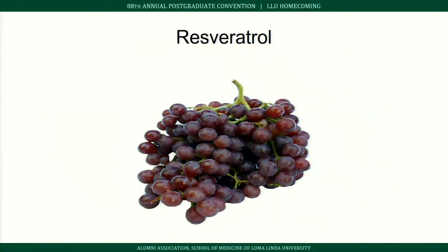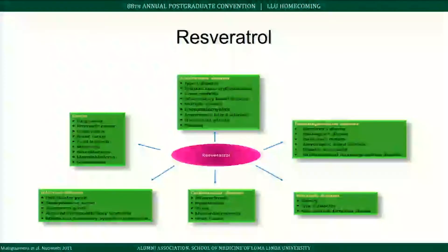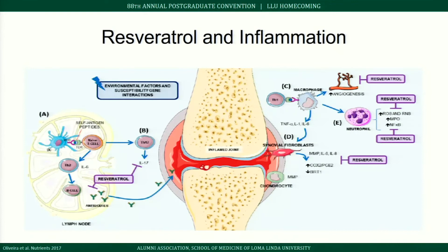Resveratrol is another anti-inflammatory phytonutrient — the beneficial compound found in wine. It has been studied in lupus, lupus nephritis, multiple sclerosis, rheumatoid arthritis, and psoriasis, and at the molecular level it blunts many of the inflammatory effects that can cause rheumatoid arthritis.